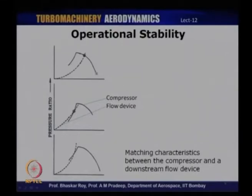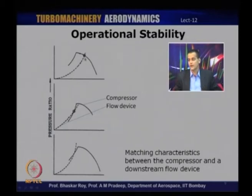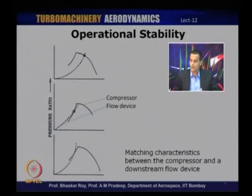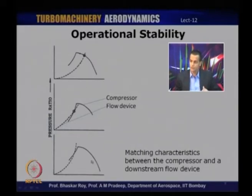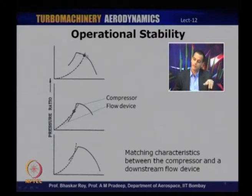To understand this let us take a look at a schematic of a typical compressor map. Here is a typical speed line of a compressor. The solid line refers to the compressor operation and the dotted line refers to the characteristics of a throttling device — a nozzle or some other downstream component that can change the compressor operation. There are three different modes of operation shown here. Let us take a look at the first one: the throttling characteristic intersects the compressor characteristic at a point on the negative slope region.